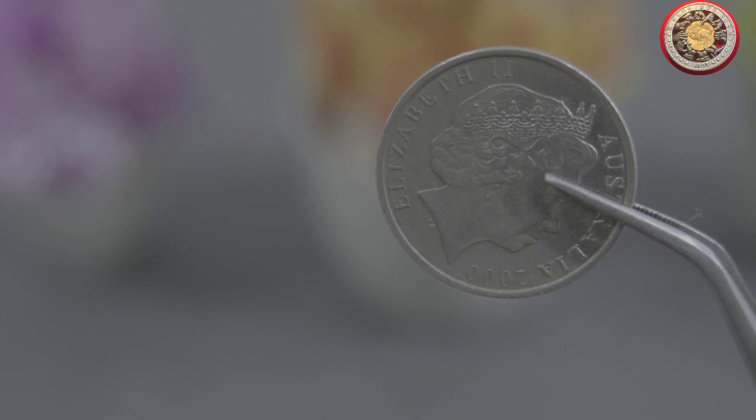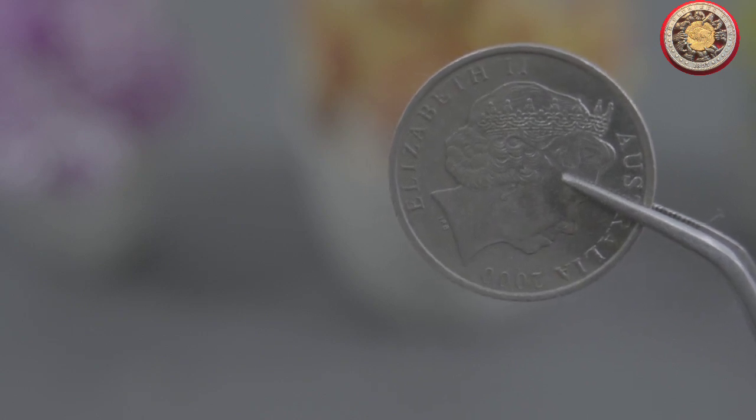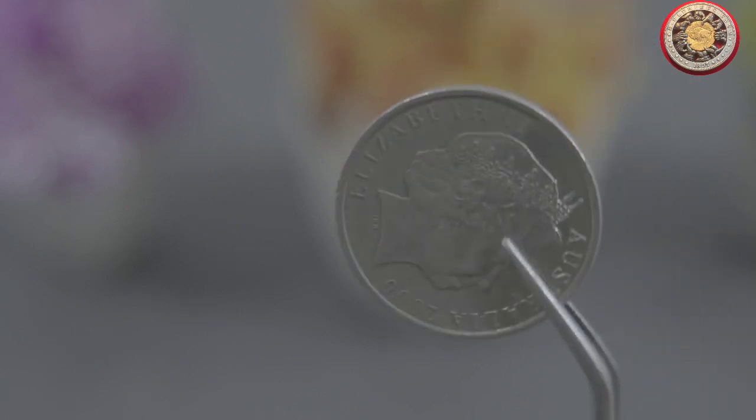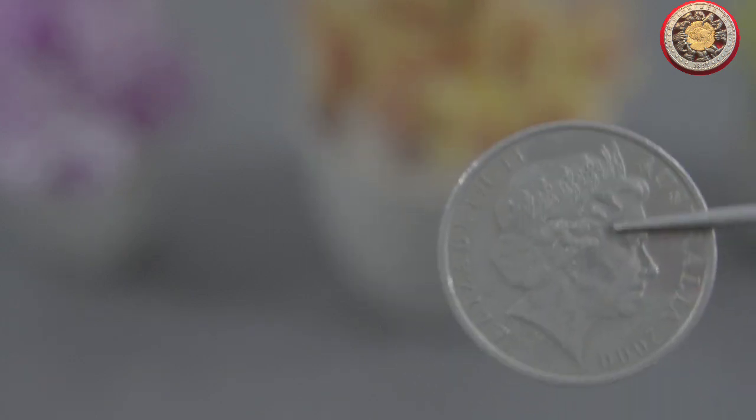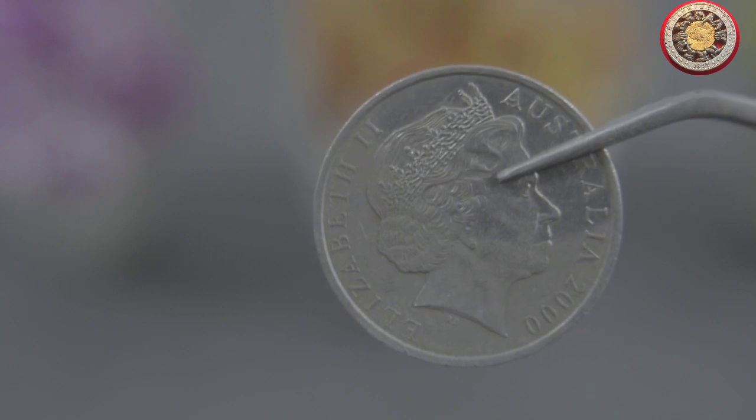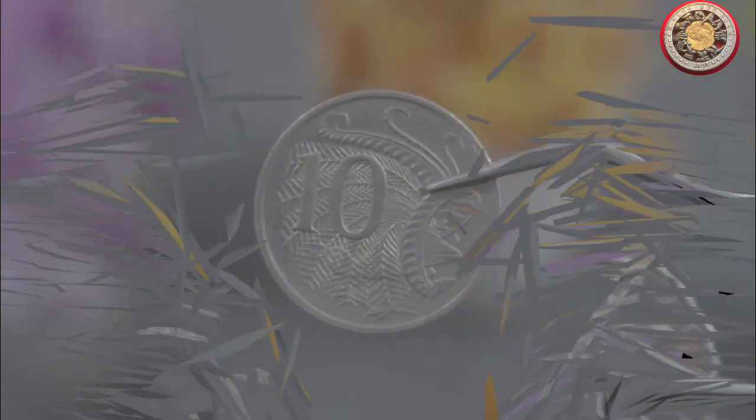Now, let's talk about the value. According to various online coin value calculators, a 10-cent coin from Australia dated 1992 can be worth up to $20 in uncirculated condition. That's right, $20 for a small 10-cent coin. But why is this coin worth so much?